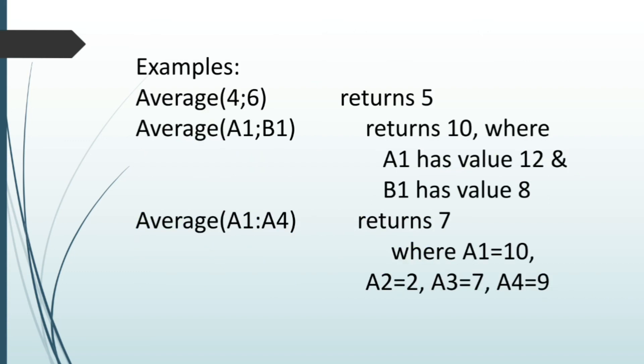Some examples of the function average are average 4 and 6. So the average or arithmetic mean of 4 and 6 is 5. 4 plus 6, 10 divided by 2 that is 5. Similarly, when we use this function average with a1;b1 where value of a1 is 12 and b1 is 8, it returns value 10.